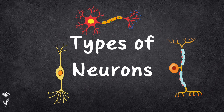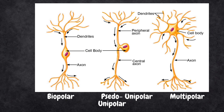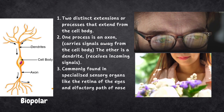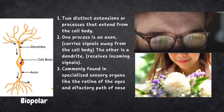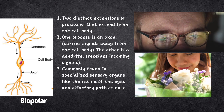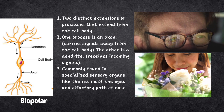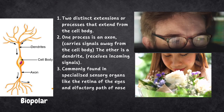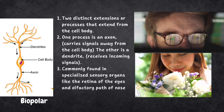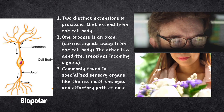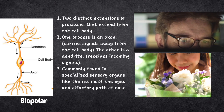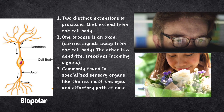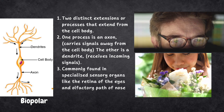Now let's talk about the structure. There are three types of neurons categorized based on structure: bipolar, unipolar and multipolar neurons. Bipolar neurons have two distinct extensions from the cell body — one axon, which carries signals away from the cell body, and one dendrite, which receives incoming signals. Bipolar neurons are commonly found in specialized sensory organs like the retina of the eye and the olfactory path of the nose, where they play a role in transmitting sensory information.